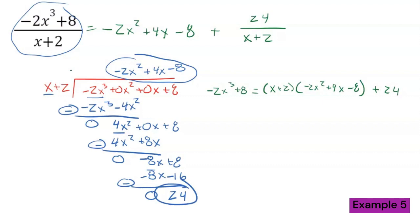That's it for polynomial long division. Hopefully the examples made sense — not only how to do it, but all the tiny details that go into it and how to express your final answer. In the next video, I'll show you how to use polynomial division to find a slant asymptote in a rational function, so stay tuned.